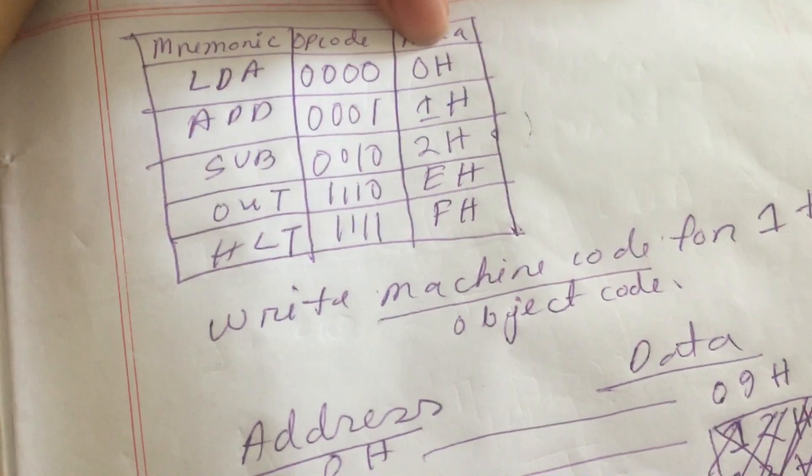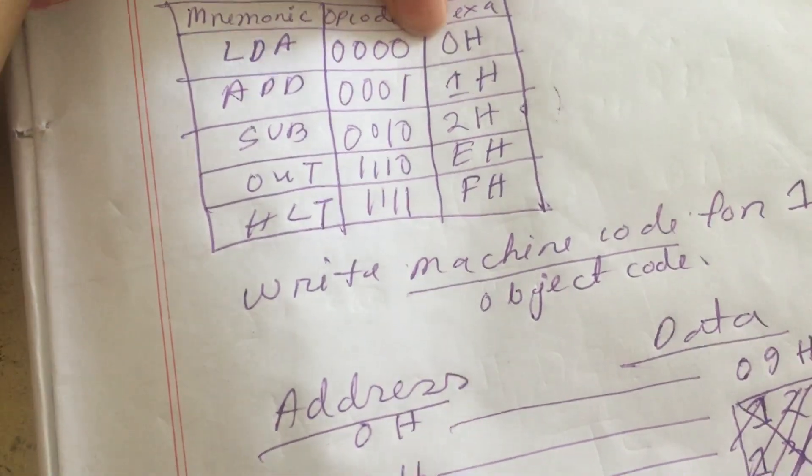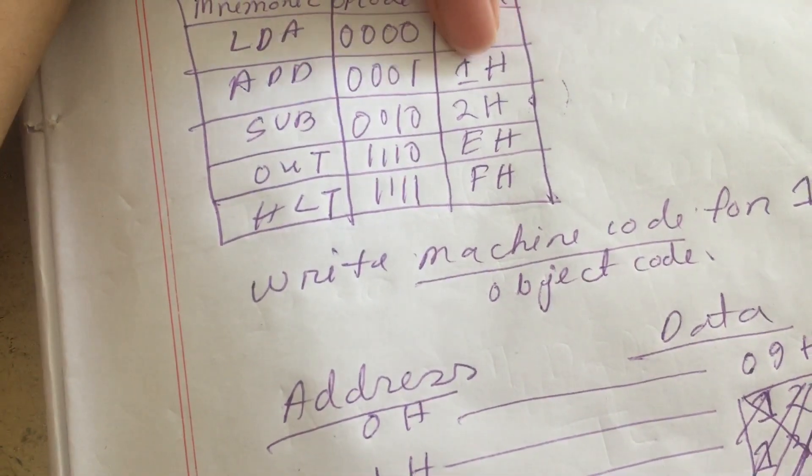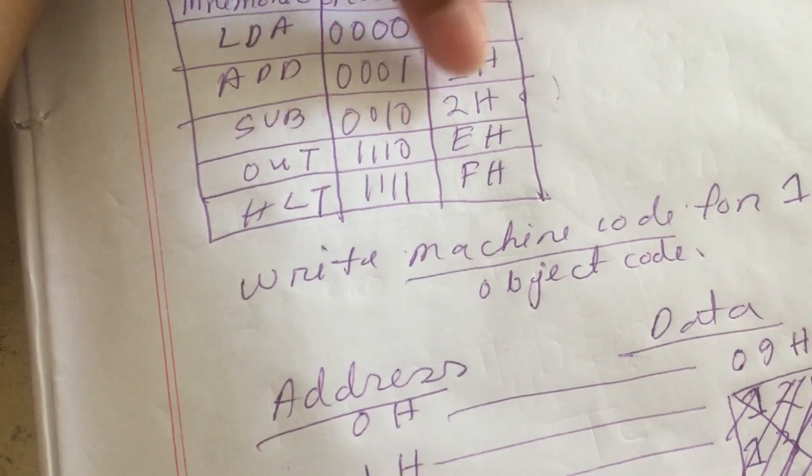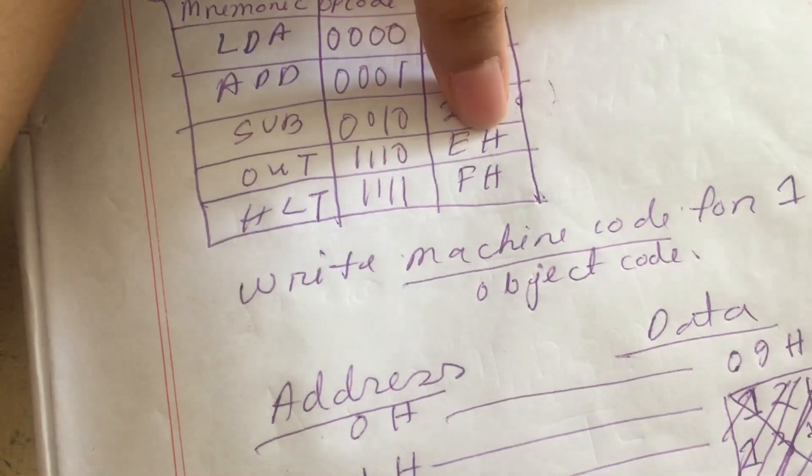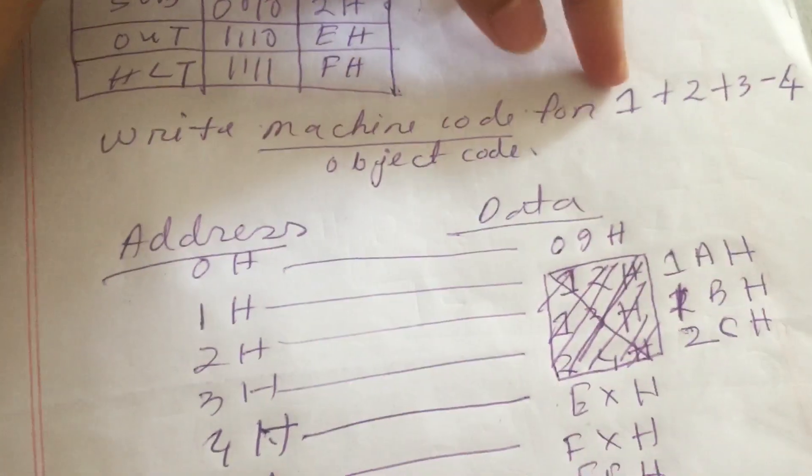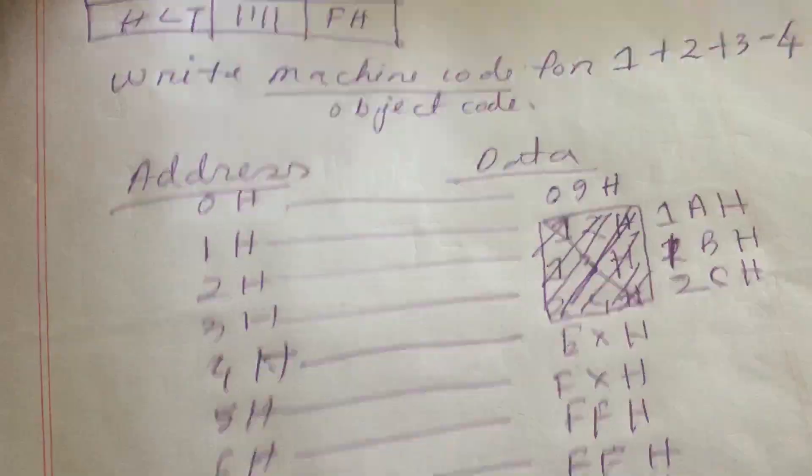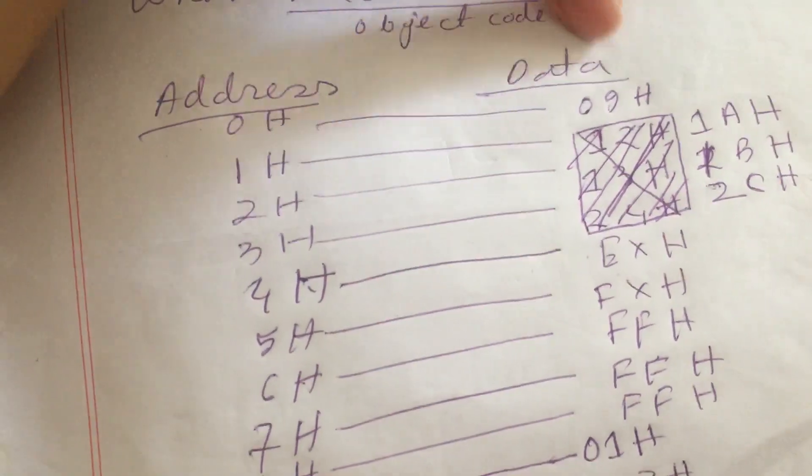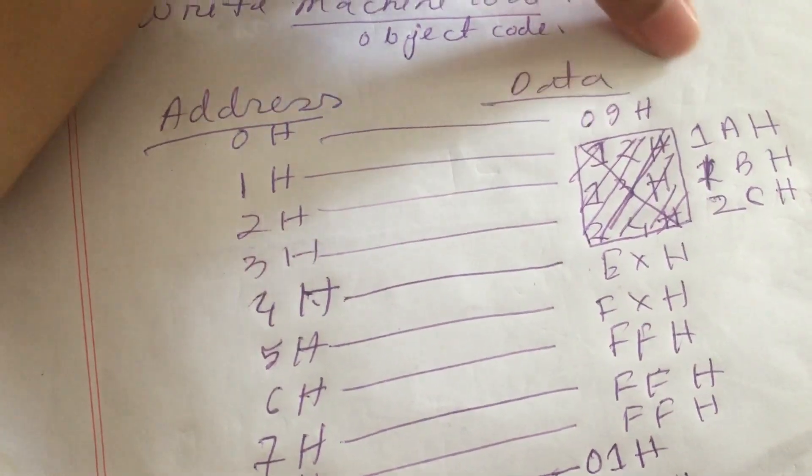You have to write the hexer for yourself. Like 00 represents 0H, 1 represents 1H, and 10 represents 2H, and this represents AH, and this FH. So in our code, 1 was loaded in the 09H, so we will simply write it 09H.